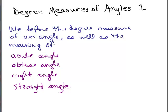This is part one of degree measures of angles and you should already be familiar with basic terminology for angles. In this video, we're going to define the degree measure of an angle as well as the meaning of these four different types of angles: acute angle, obtuse angle, right angle, and straight angle.